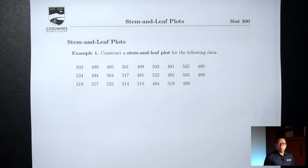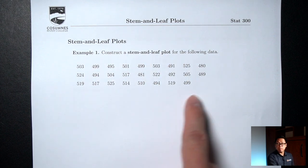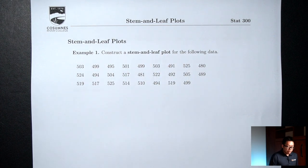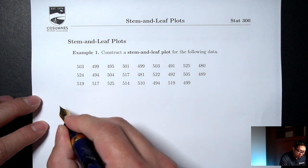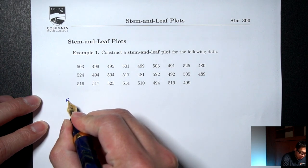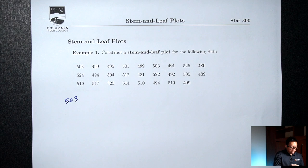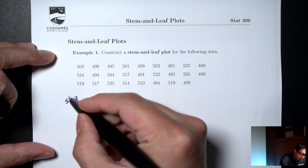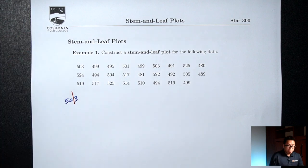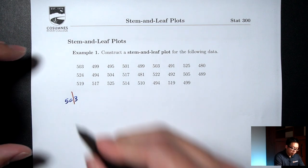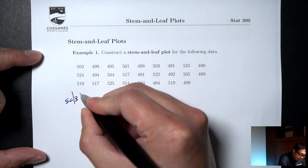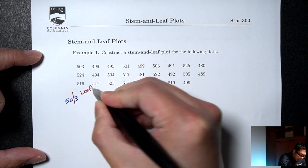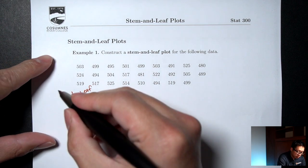Stem and Leaf Plots are plots that we can make for quantitative data, which are numbers. Let me take a look at a typical number here — say it is 503. If I cut off the very last digit, that very last digit is called a leaf. Everything before it is called a stem.